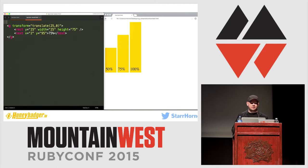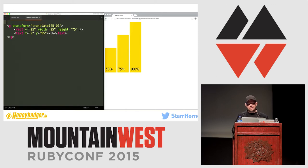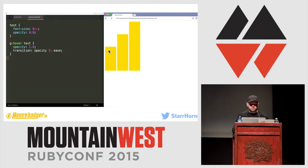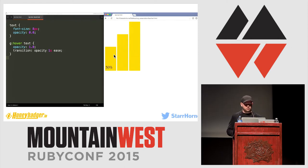I'm grouping together using the G element the rectangle and the text. The G element is nice because it not only lets you structure your documents in a way that makes more sense than having everything at a base level, it also lets you play tricks with the origin so you can do things like relative positioning. Then to add interactivity, I'm just going to use some CSS — I hide the numbers by default and when you hover over it, I show them with a transition.